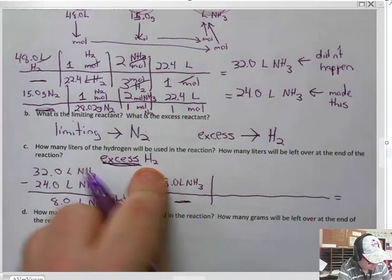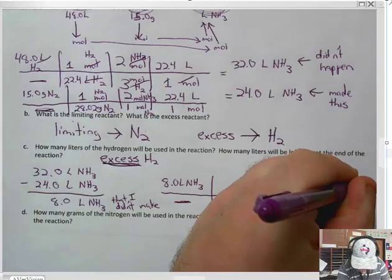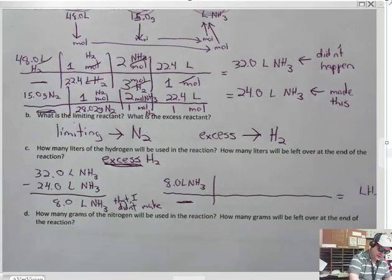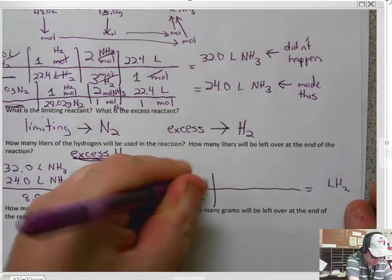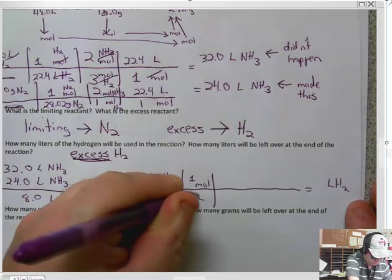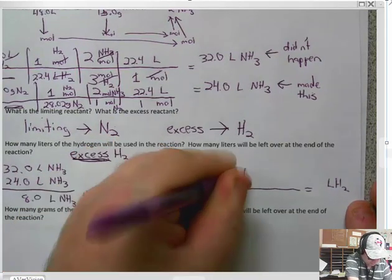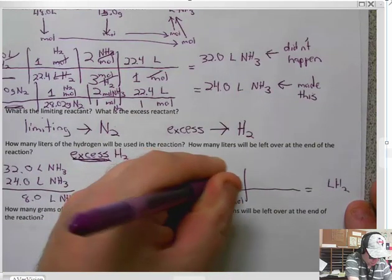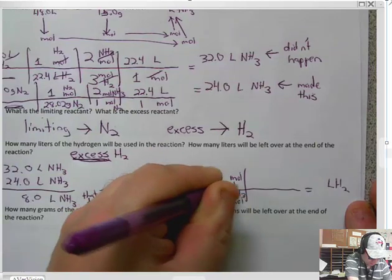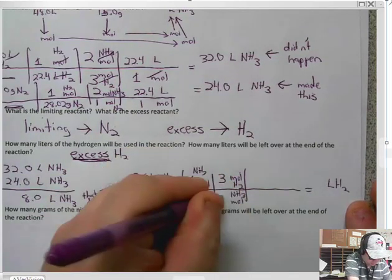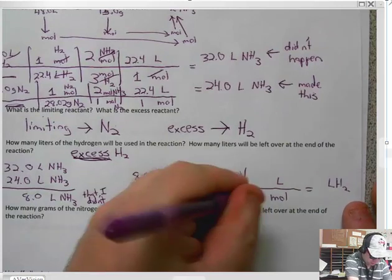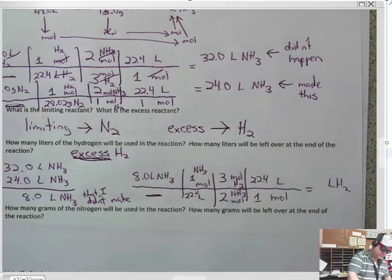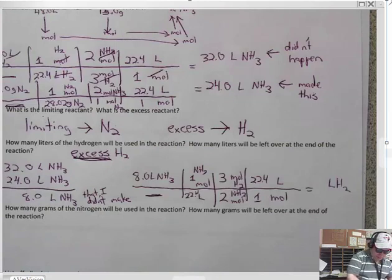So I'm going to take this 8 liters of NH3 and I'm going to convert it back to my excess reactant, which is hydrogen. Now, hydrogen was in liters to start, so I'm going to put this back into liters of hydrogen. Here we go. Liters on the top, liters on the bottom, moles here. One mole, 22.4. This is moles of NH3. Moles on the top, moles on the bottom. What are you going to convert to? Moles. What are you going to convert to? Liters. One mole, 22.4. And we get an answer of 12 liters.